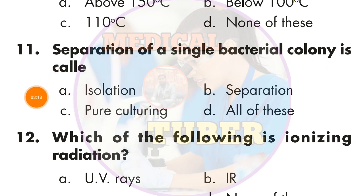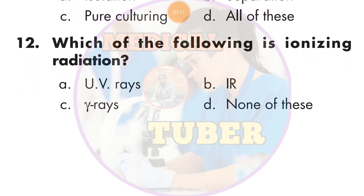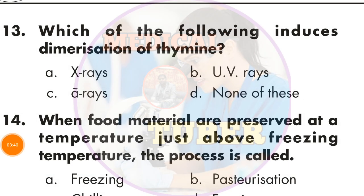The answer is A — isolation. Question number 12: Which of the following is ionizing radiation? The answer is C — gamma rays. Question number 13: Which of the following induces dimerization of thymine? The answer is UV rays.